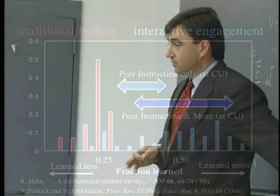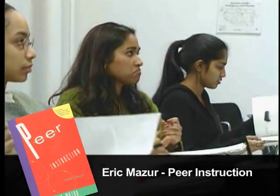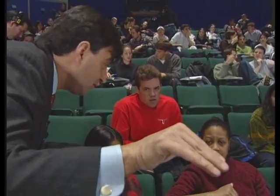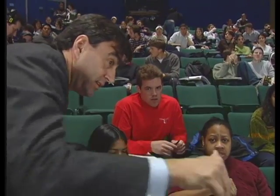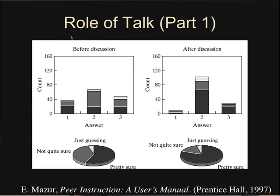Eric Mazur wrote the book Peer Instruction, which first popularized this pedagogical approach, where faculty members pause intermittently throughout their lectures and ask students questions. Students would then answer using peer discussion. In Eric's approach, he would first ask the question individually and have students vote, then follow up with peer discussion time and have them vote again after discussion. He found that when answering individually, students chose many different answers, but after peer discussion they gravitated toward a single answer — usually the correct one.